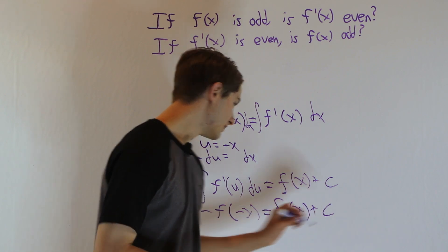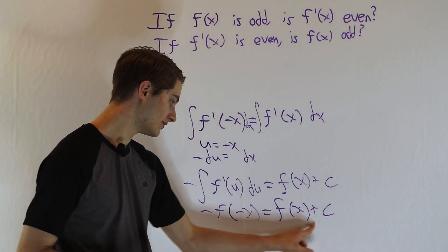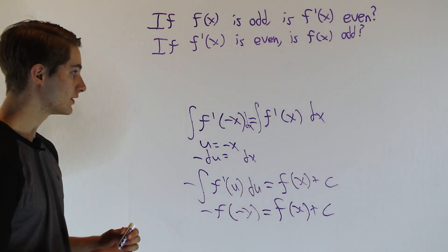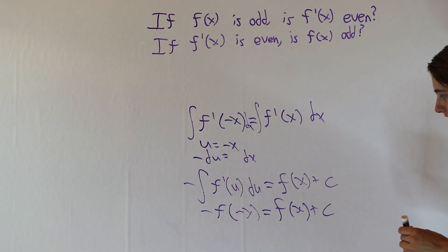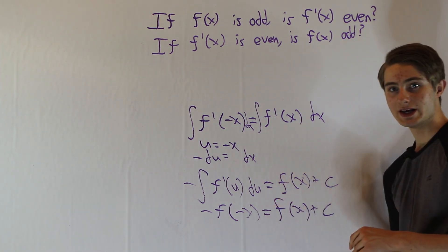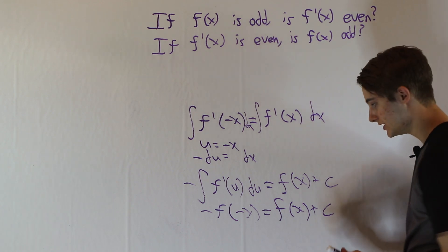So we have this final statement: negative f of negative x equals f of x plus c. Let's do one final modification to this, which is just going to be to multiply by negative 1 on both sides. What that'll do, a constant will stay a constant even if it's negative,